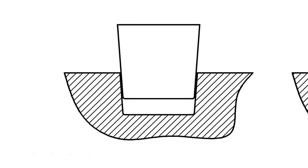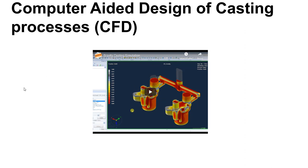There is a lot of software available to help you model casting processes — you may hear the term CFD, which stands for computational fluid dynamics. There's also thermodynamic modeling involved in this process. This software helps you optimize your process before you go to the trouble of having patterns made, which in some industries can be a very expensive undertaking. That's our introduction and we will delve into more detail with particular casting processes in the next couple of lectures.